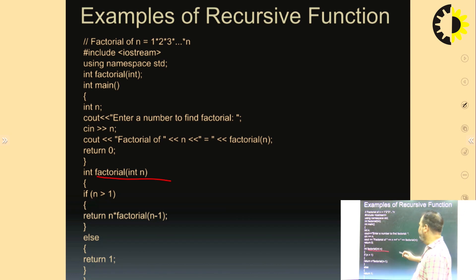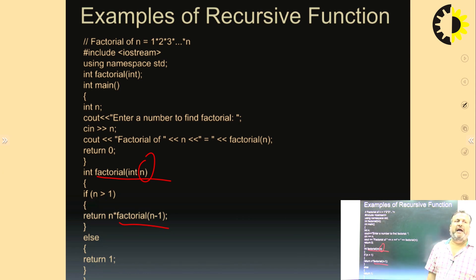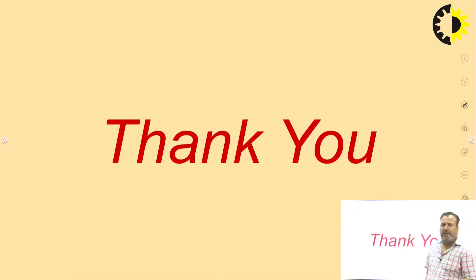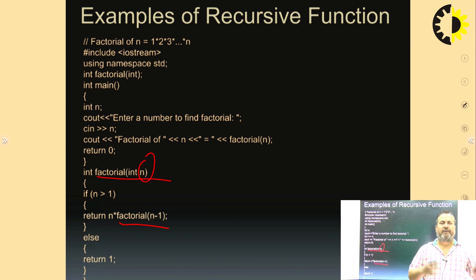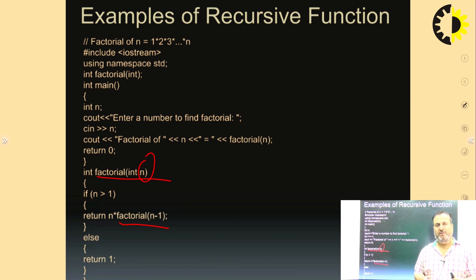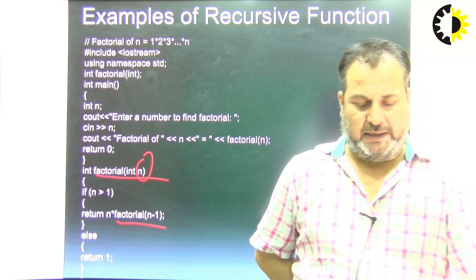Here we have calculated the factorial of some integer value and made the call to factorial itself by passing n into n minus 1 as the argument. So, to summarize: we discussed what functions are, how they modularize code, how to write effective code using user-defined functions, types of functions, call by value and call by reference, inline functions, friend functions, and recursive functions. That is all about functions. Thank you.